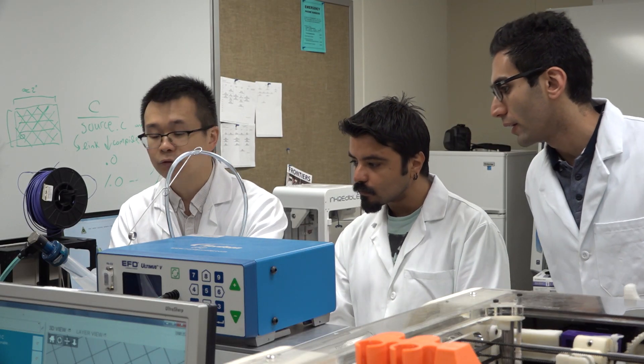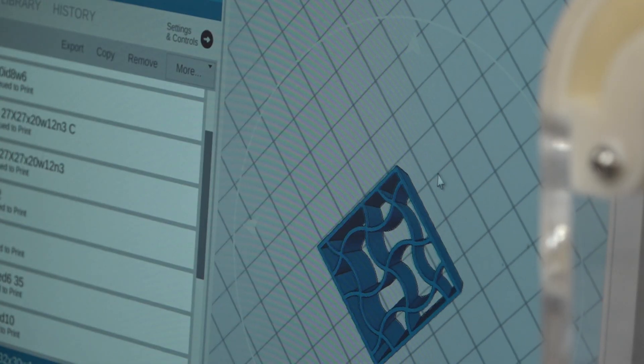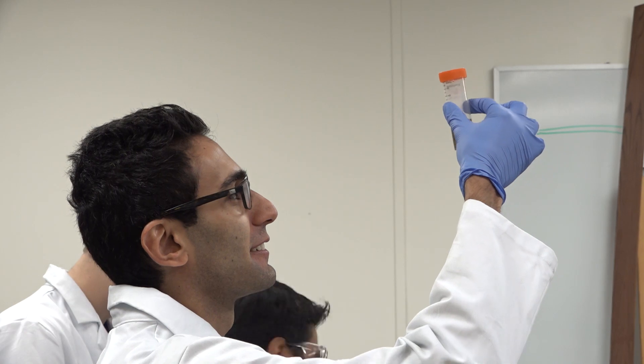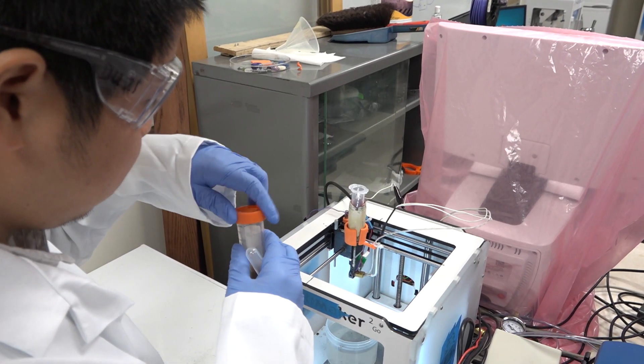We failed several times. We use inkjet printing method, so it means we can print like dedicated structures. So first we mix the graphene oxide together with deionized water.